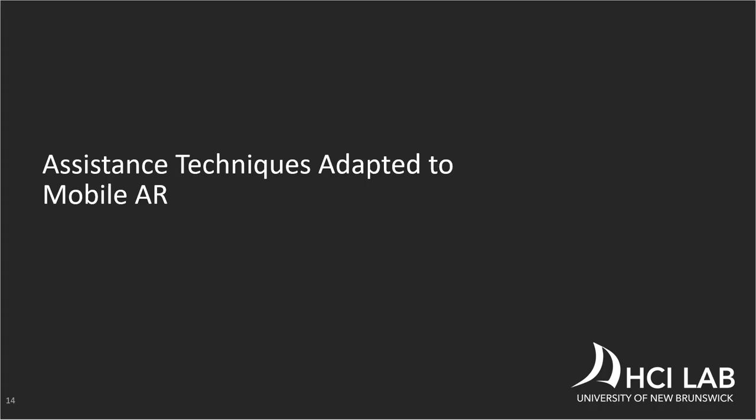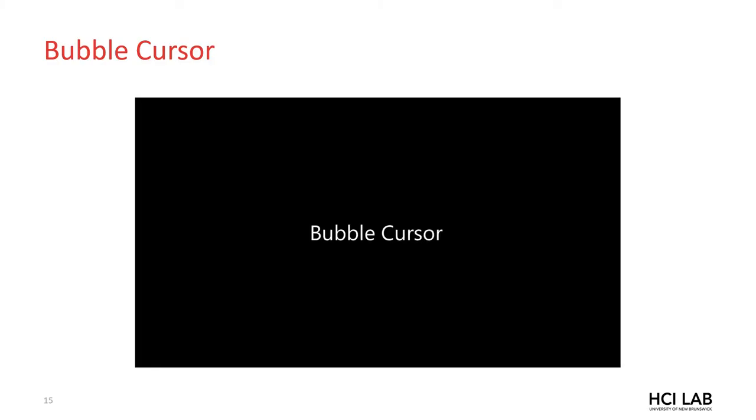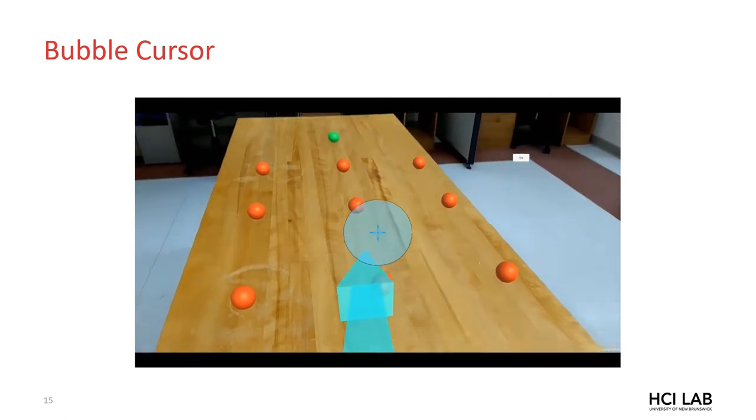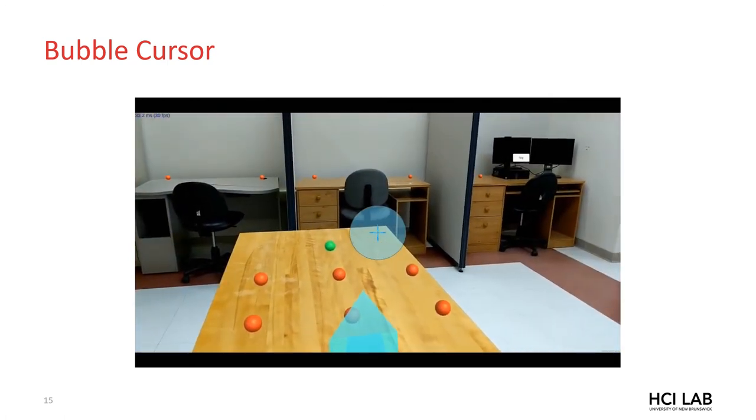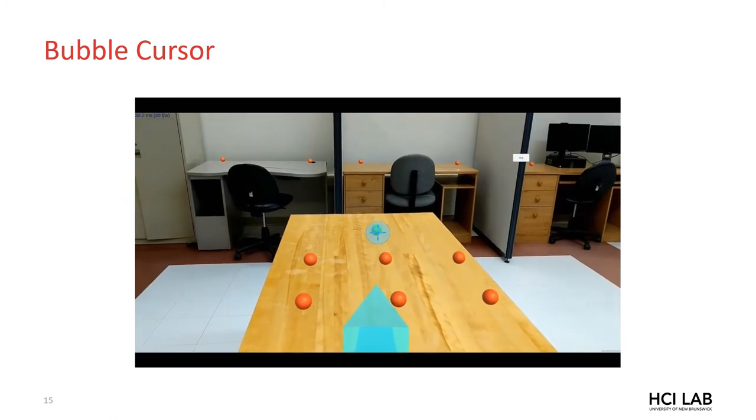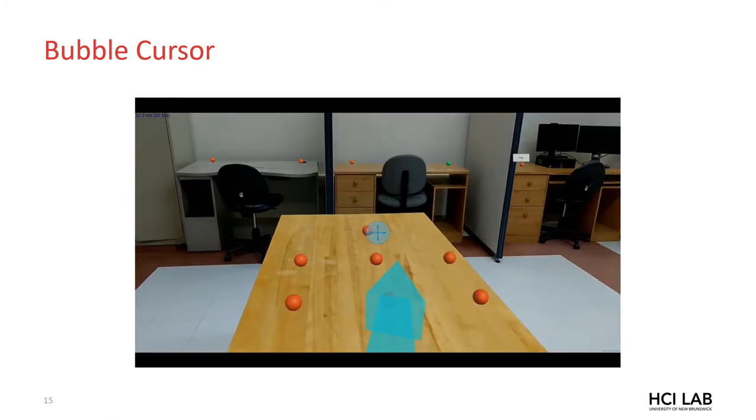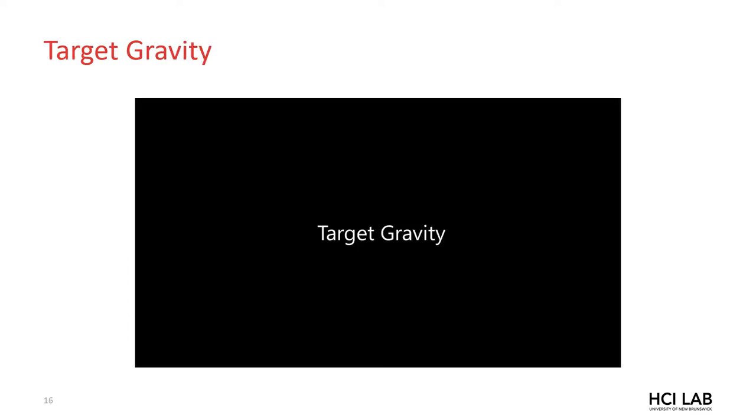I will now show you each of the three target assistance techniques. Each of these techniques uses the same baseline technique and changes the cursor behavior to facilitate pointing. Bubble cursor improves pointing performance by dynamically resizing the selection area of the cursor such that the closest target is always selected, effectively increasing the size of the targets, making target selection very rapid.